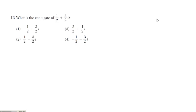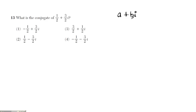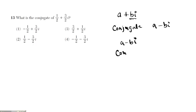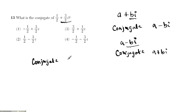Moving along to question 13. What is a conjugate? If you have a complex number a plus bi, the conjugate happens when you take the opposite of the imaginary component. So if this is plus bi, the conjugate is a minus bi. If you had a minus bi, the conjugate would be a plus bi. Just focus your energy on the imaginary part. Since the imaginary part is positive 3 over 2i, the conjugate is 1 over 2 minus 3 over 2i. The answer for question 13 is option 2.